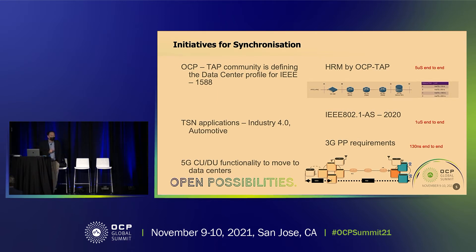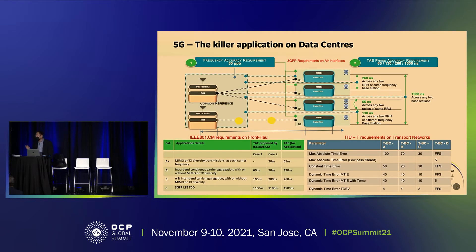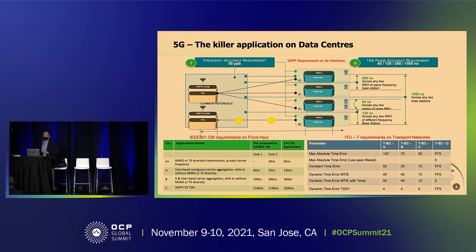When we look at 5G DU-CU functionality moving to the data center, it's in the nanosecond magnitude. All these requirements have already been defined for today's 5G applications and implementations. From those driver requirements, we map to a two-dimensional measurement. One dimension is frequency accuracy, defined in IEEE 802.1CM, where the frequency accuracy must be maintained within 50 ppb range — that's a very stringent requirement.